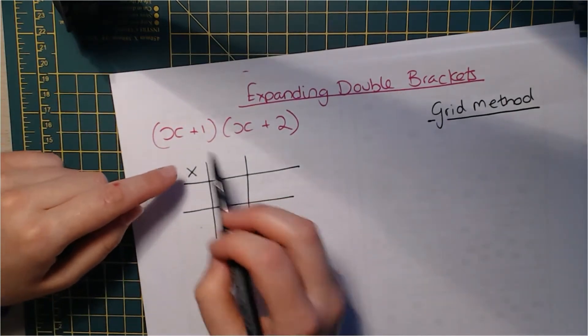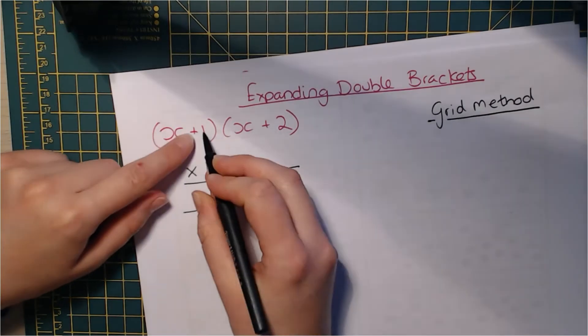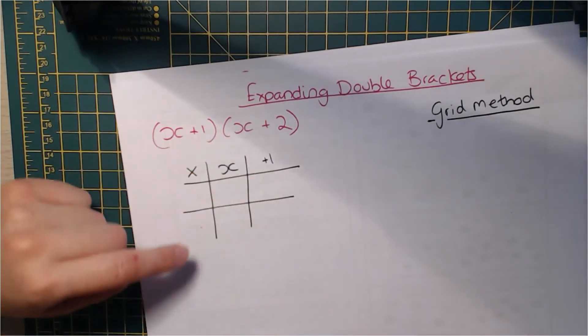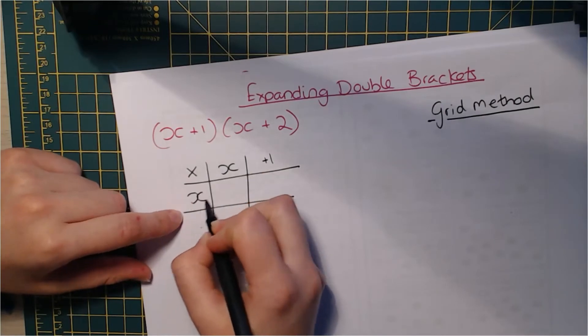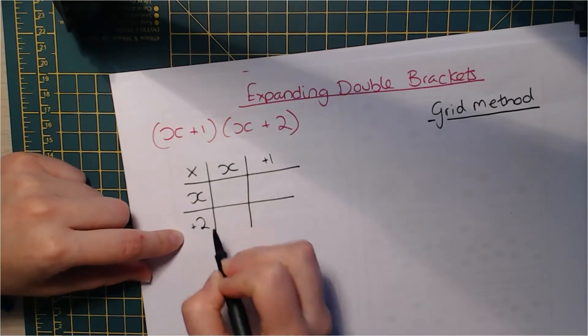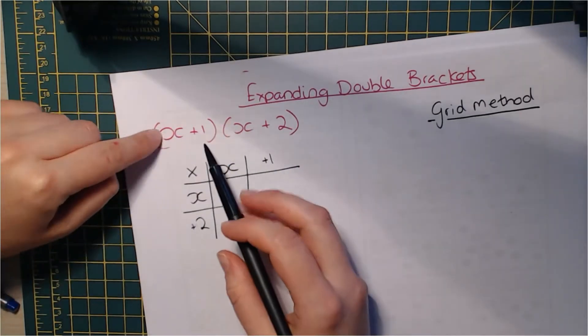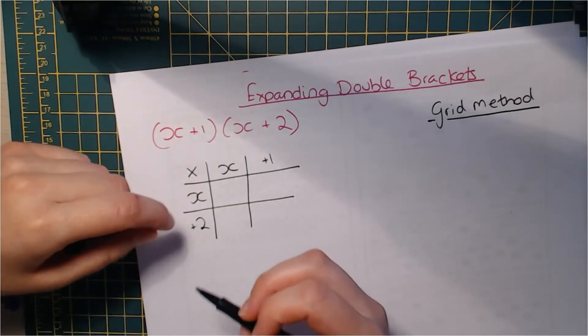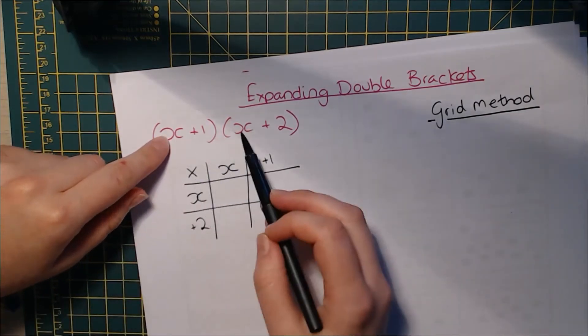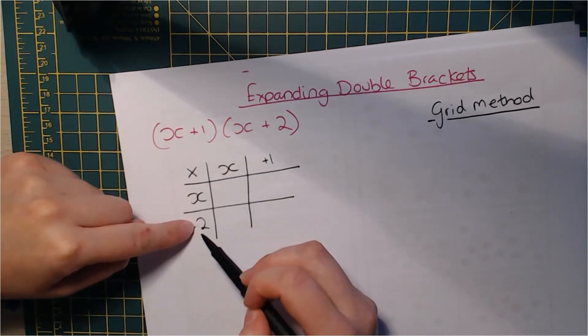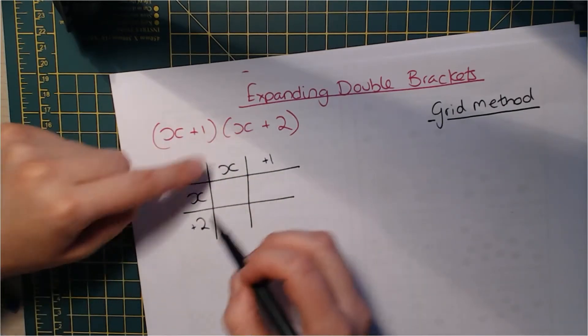So I'm going to put the terms from the first bracket along here. I'm going to have x here and positive one here. And I'm going to put the other one down the side, x and positive two. Now, it wouldn't have mattered if I'd put this one along the top and this one down the side. You'll get the same answer because you're still multiplying it all together. What you can't do is put the x and the x up here and the one and the two down there. You have to keep the bracket together.